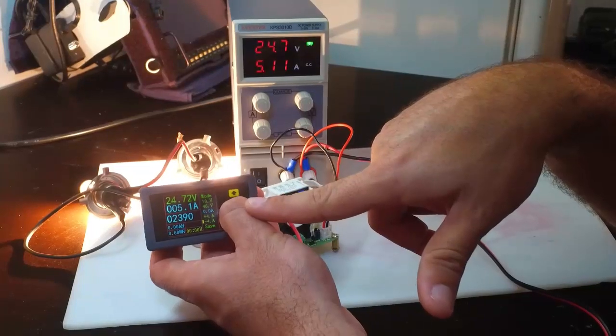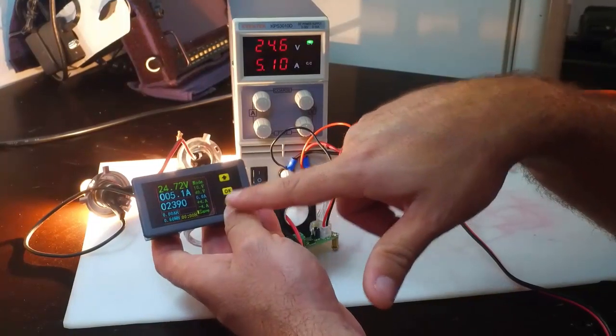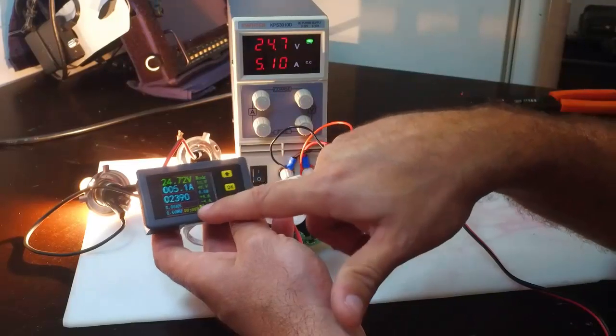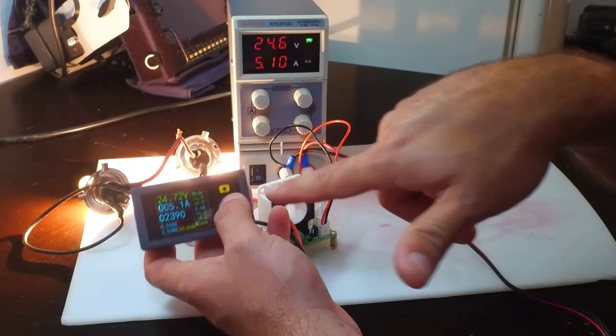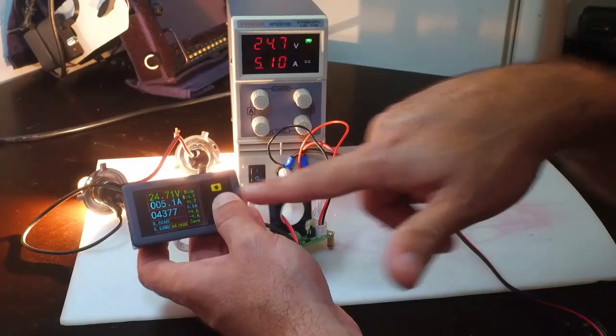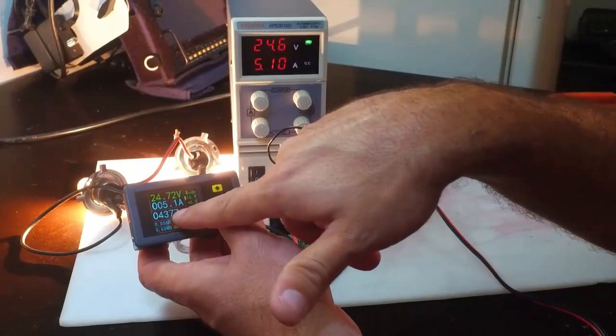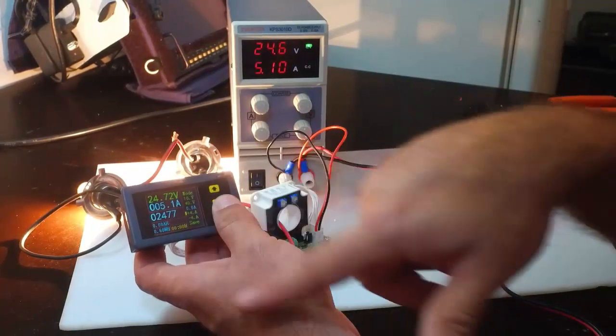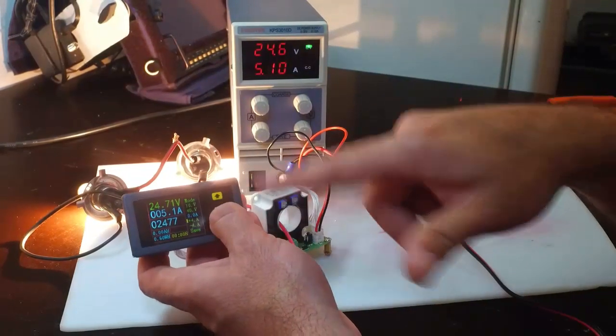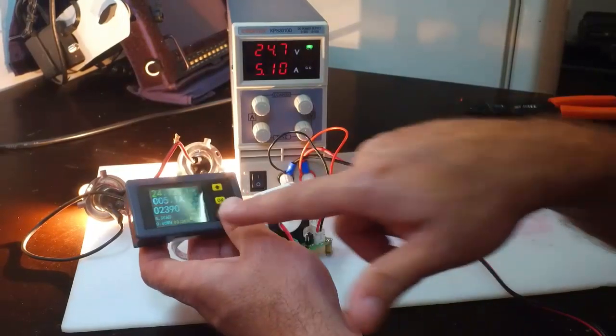We can save these values. Just put the cursor into the save position. Remember this number—for example, 4377 or this number 2477. We save those numbers. Put the cursor into the save position and then turn off.